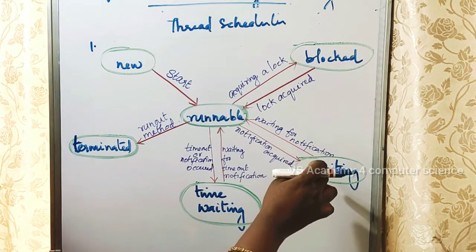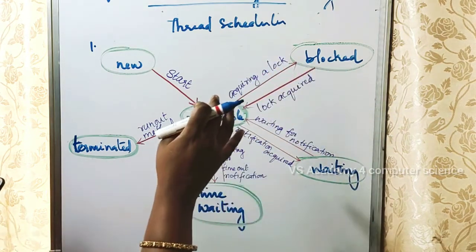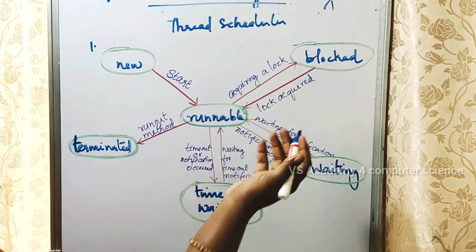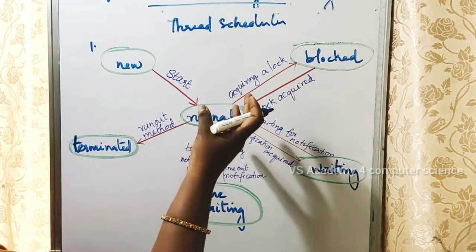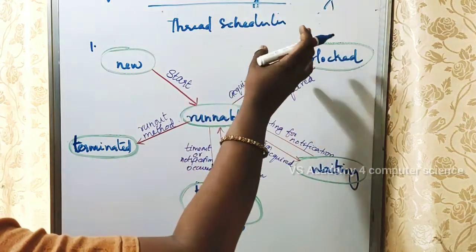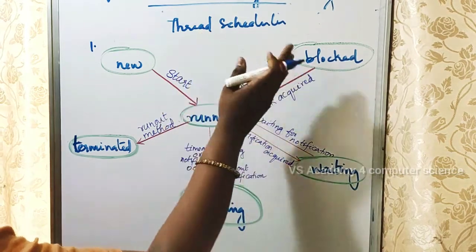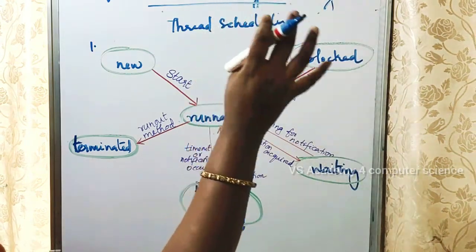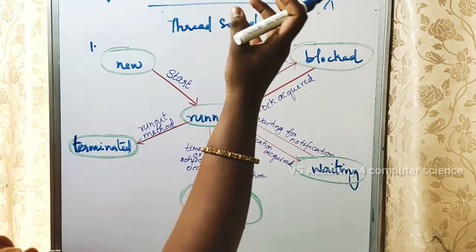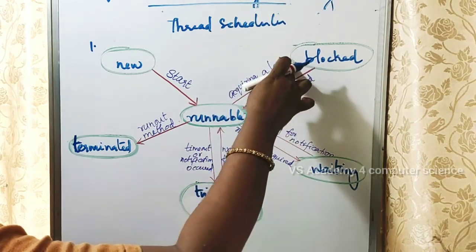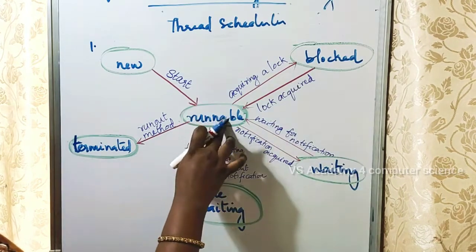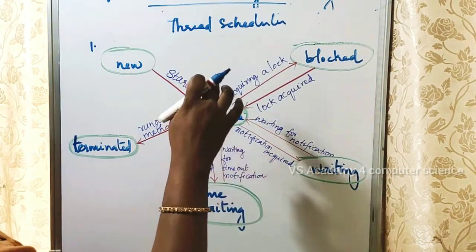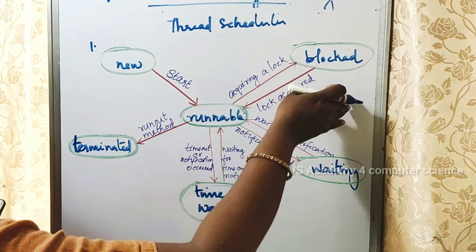If a runnable thread tries to access a protected area, it will go to a blocked state. If you want to access that protected area, the thread cannot remain runnable. It must wait for the lock to be released before it can become runnable again.